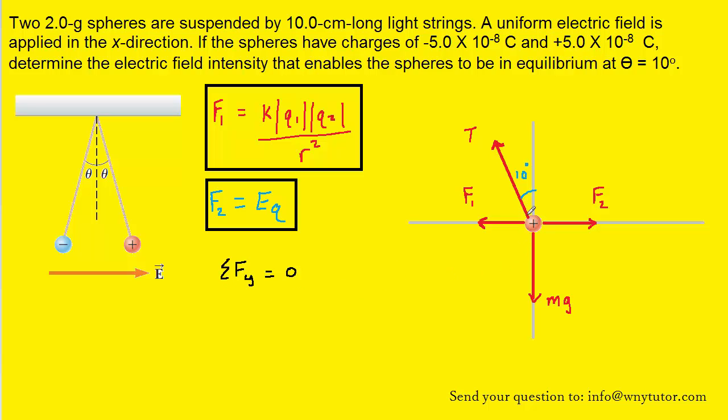But before we do that, we need to break the tension force into its y and x components. From the diagram, we can see that the y component would be equal to T cosine of 10 degrees, and the x component would be T times the sine of 10 degrees. It's a good idea, after breaking a force into its y and x components, to erase the resultant of that force, because we really only need to be dealing with the components.